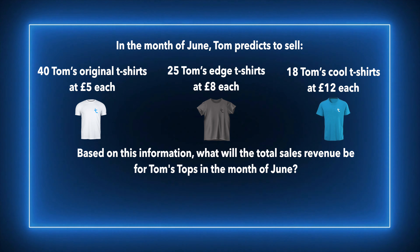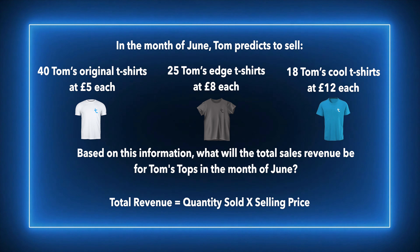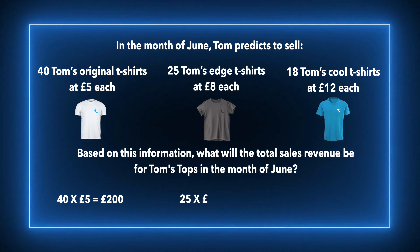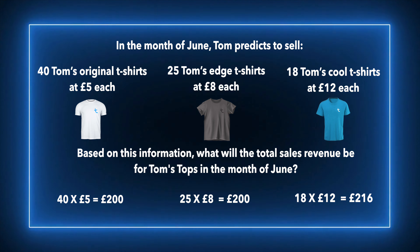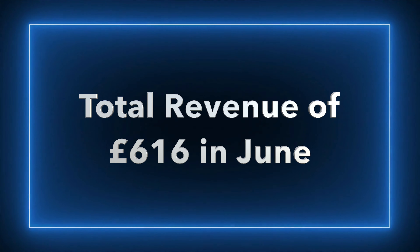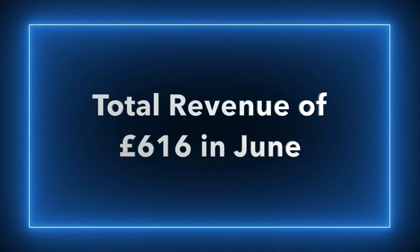We have more information to deal with but the process for calculating total revenue is just the same. Using quantity sold multiplied by selling price: 40 Tom's Original t-shirts at £5 equals £200; 25 Tom's Edge t-shirts at £8 each equals £200; and 18 Tom's Cool t-shirts at £12 equals £216. Adding them all together gives Tom's Tops a total revenue of £616 in the month of June.